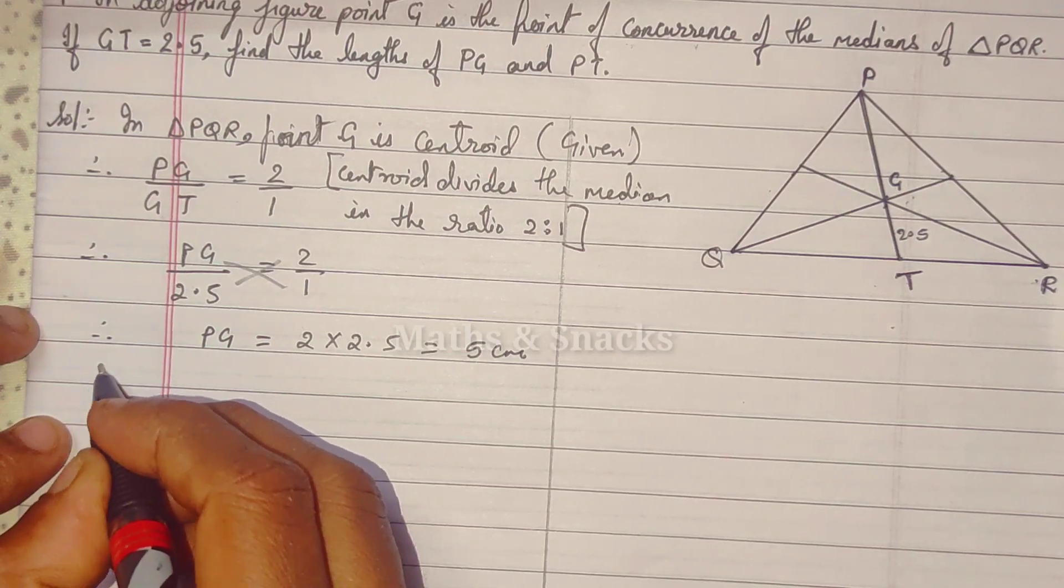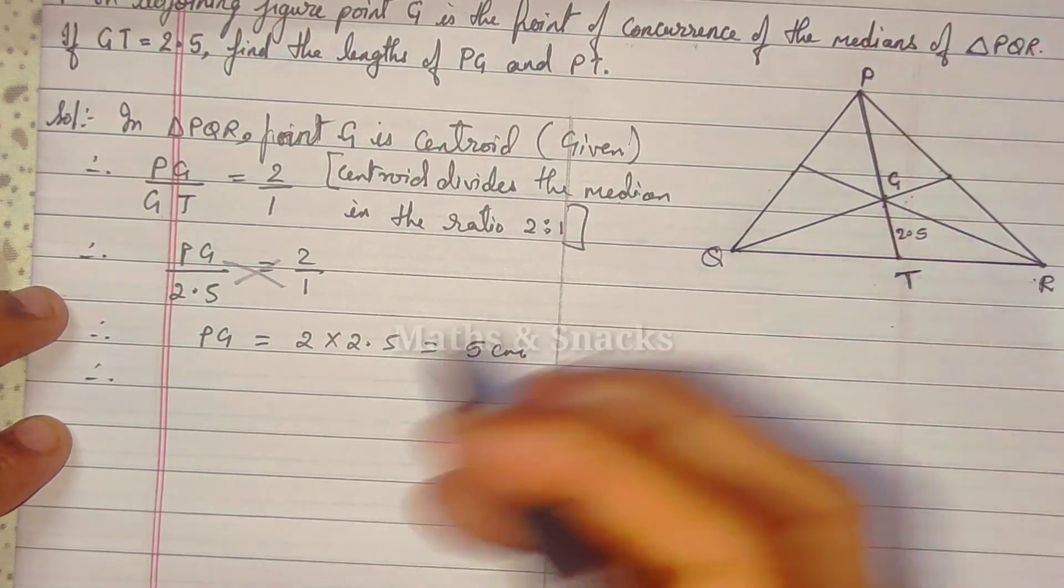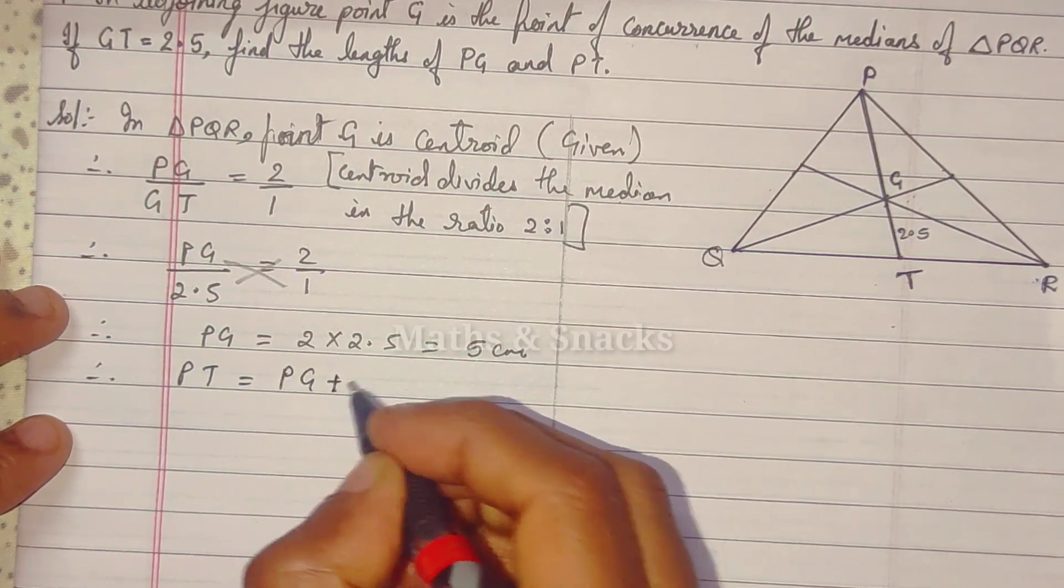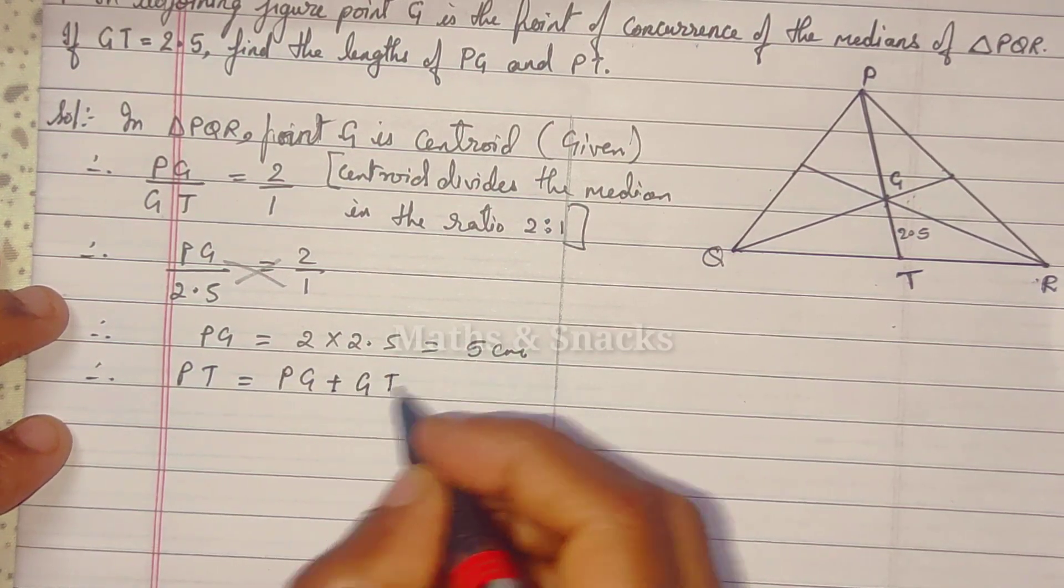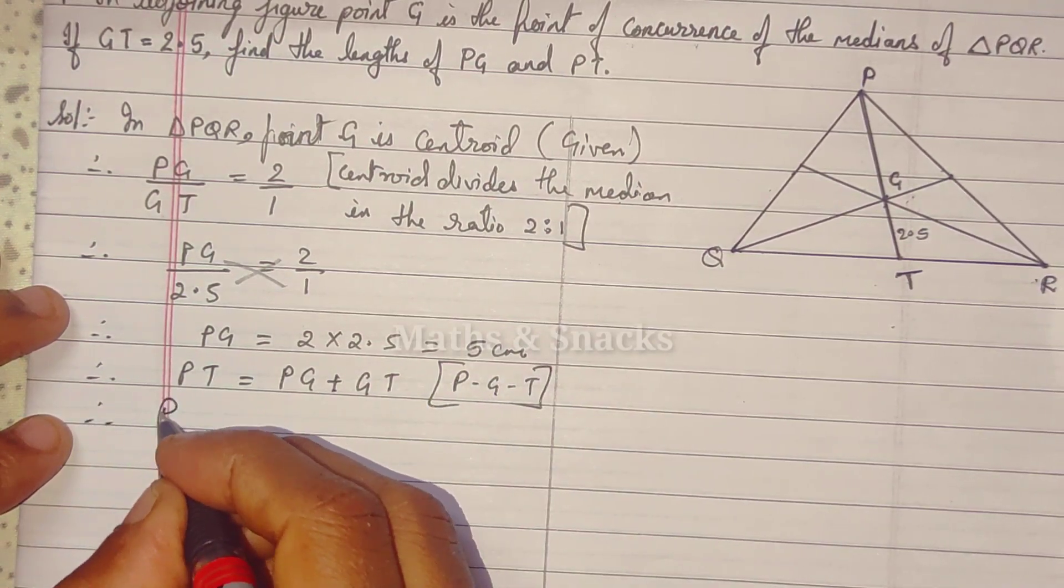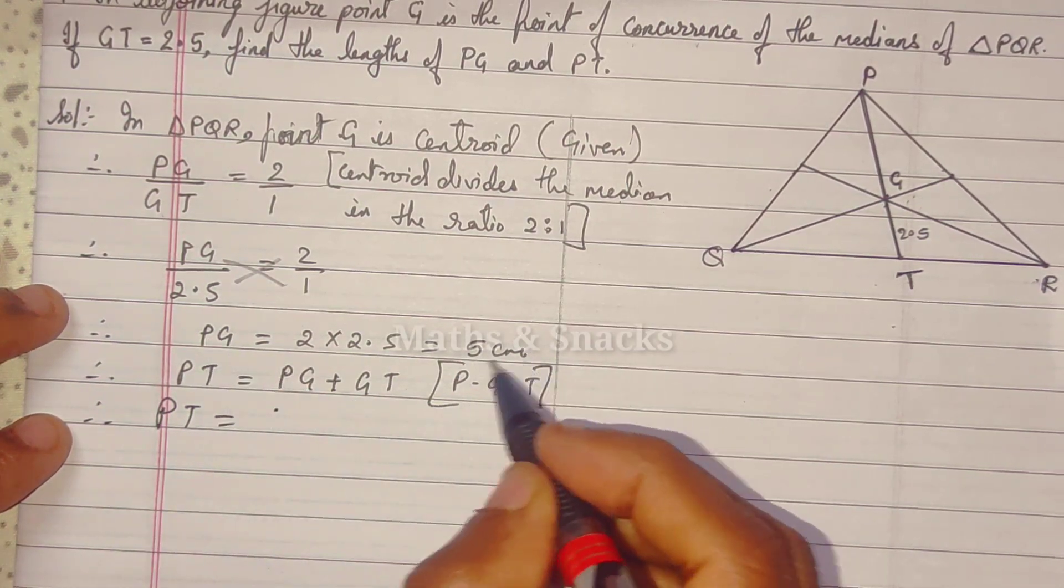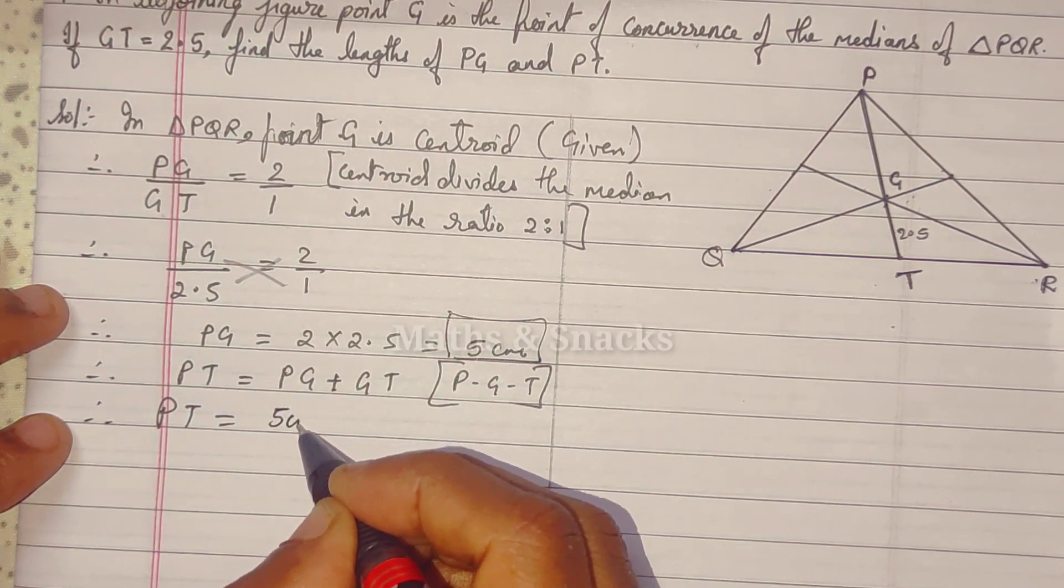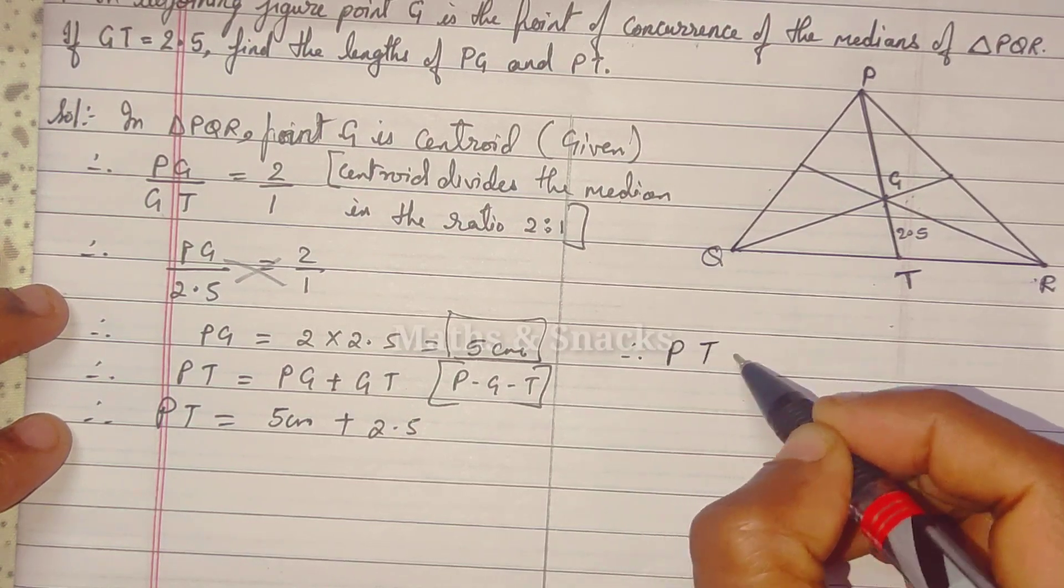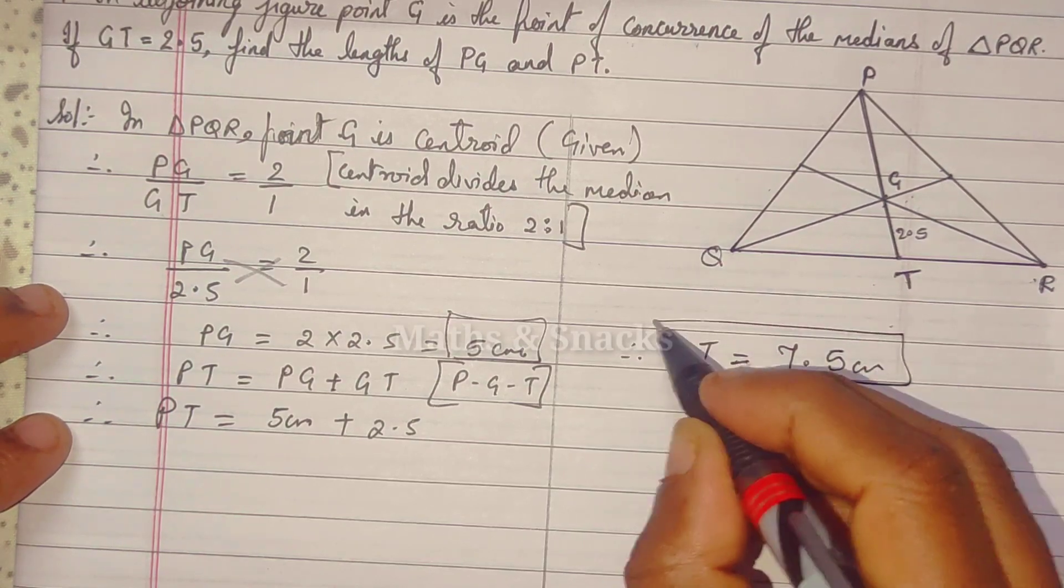So therefore, now we have to find PT. So PT is equals to PG plus GT because G is between P and T. So therefore, PT is equals to PG, which is 5, plus GT is 2.5. So therefore, PT is equals to 7.5 centimeters. Okay?